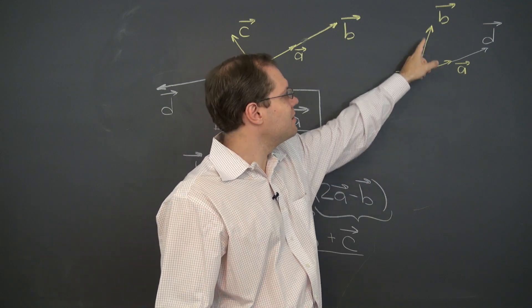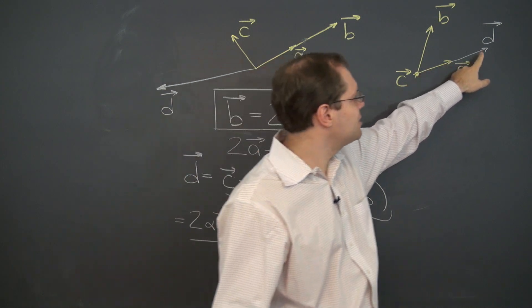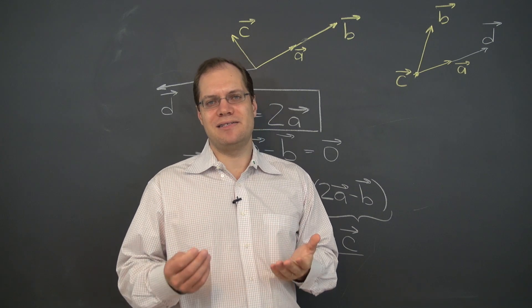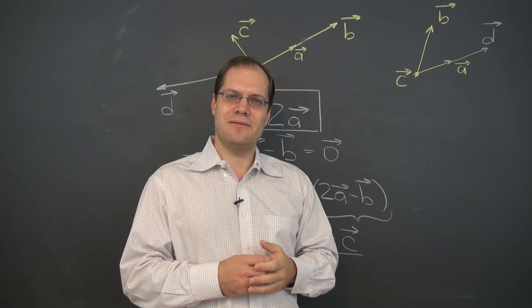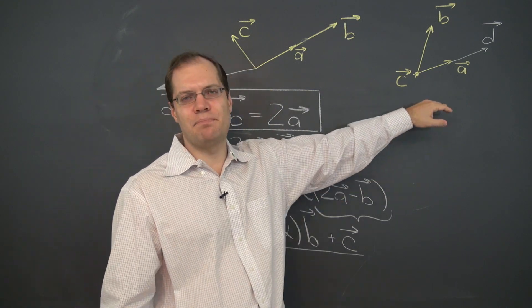We have two vectors a and b and the third one c, that's the zero vector. And we need to decompose d. Let's once again decide whether a, b and c are linearly independent. Take a moment to think about it. And the answer is yes, they are linearly dependent.